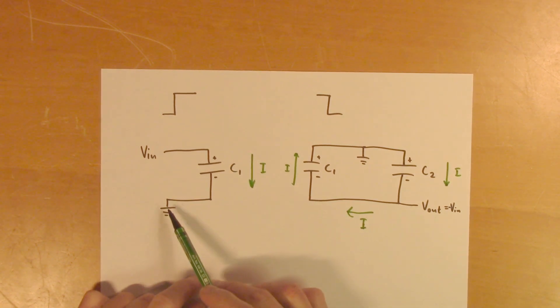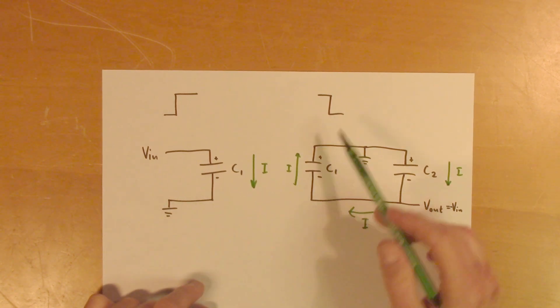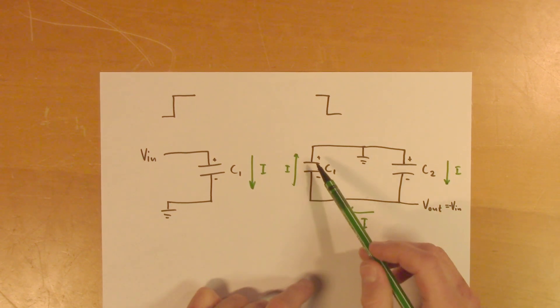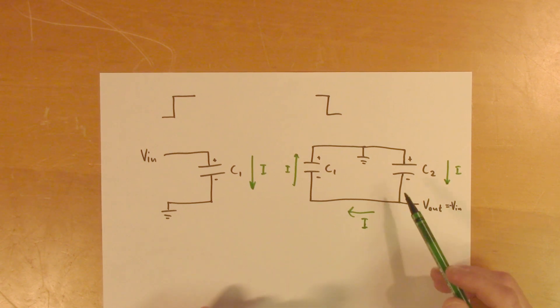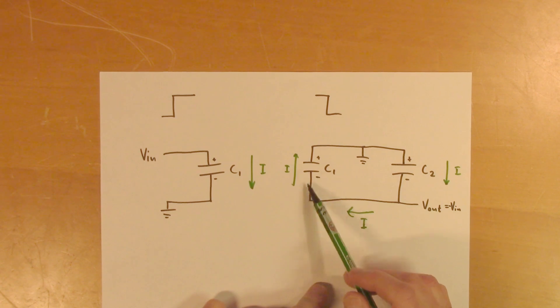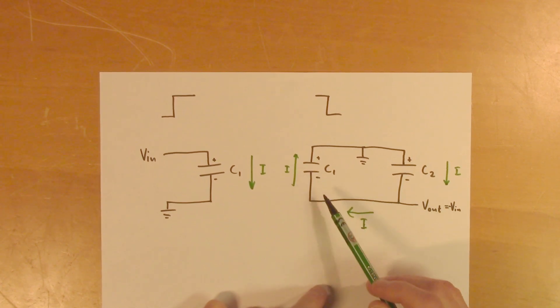C1 is charged once again. And then on the negative flank, we now have this capacitor that is fully charged. And this capacitor is charged only halfway. So this time, it will transfer not as much charge as last time,